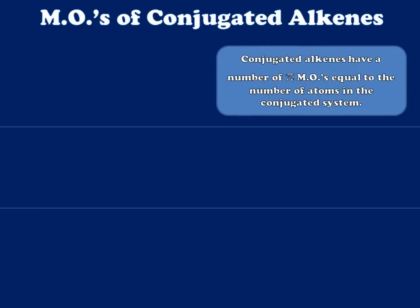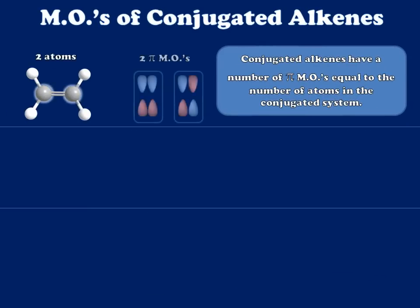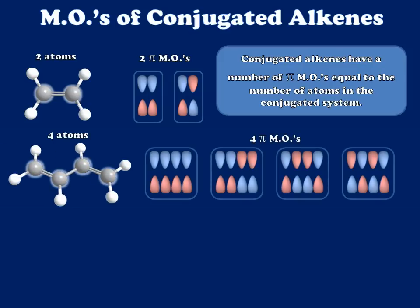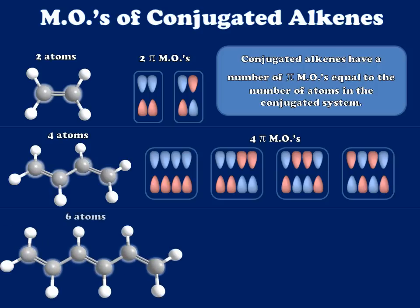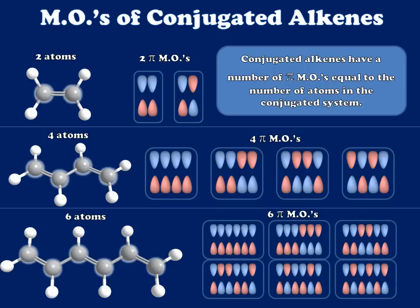To sum up, conjugated alkenes have a number of pi molecular orbitals equal to the number of carbon atoms within the system. Four atoms give four pi MOs, six atoms give six pi MOs, and this trend continues for as long as we're adding additional double bonds such that the p-atomic orbitals are capable of overlapping. Next time we'll talk about how to mathematically handle the energies of these MOs. I'll see you then.